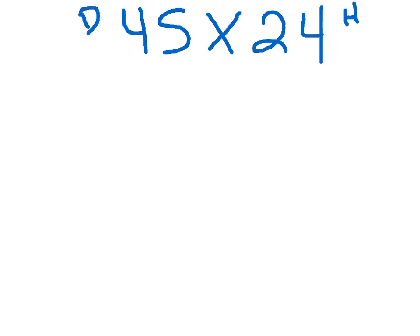This strategy is called halves and doubles. In this strategy you have two different factors. Let's say we have 45 times 24, and you decide which one of your factors can be halved and then the other one is doubled when you break it apart. So let's say that we have 24 as our half one because it's even, and 45 will be the one that we double.